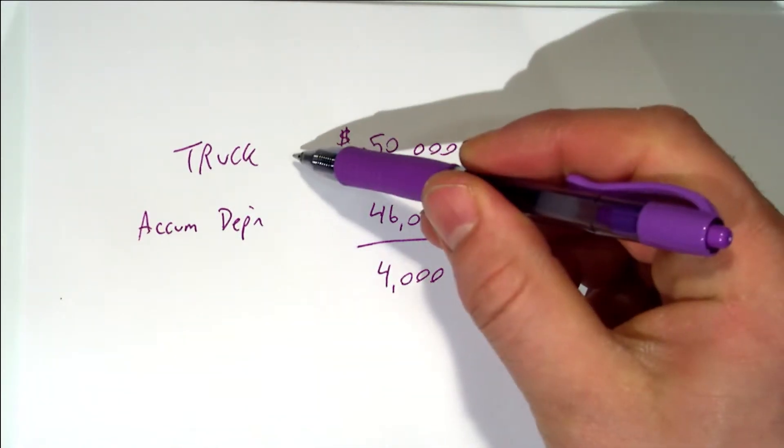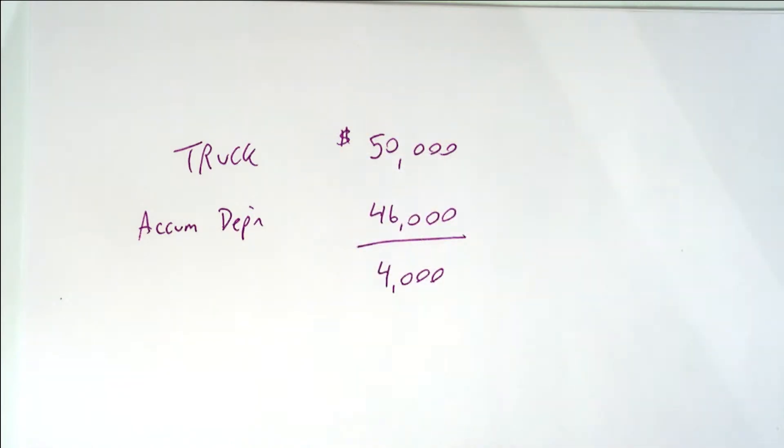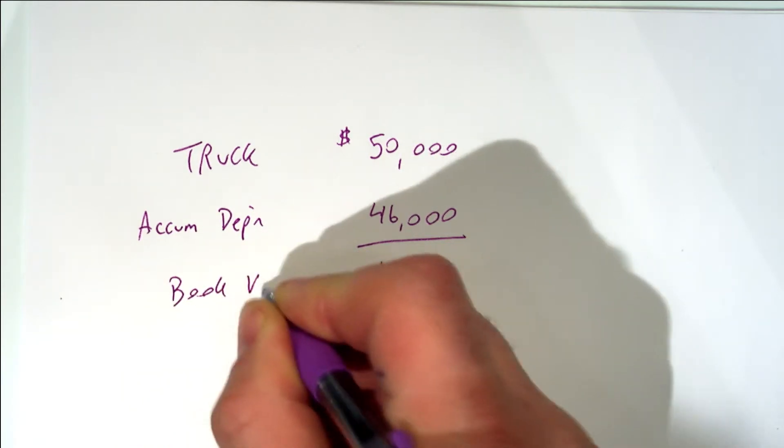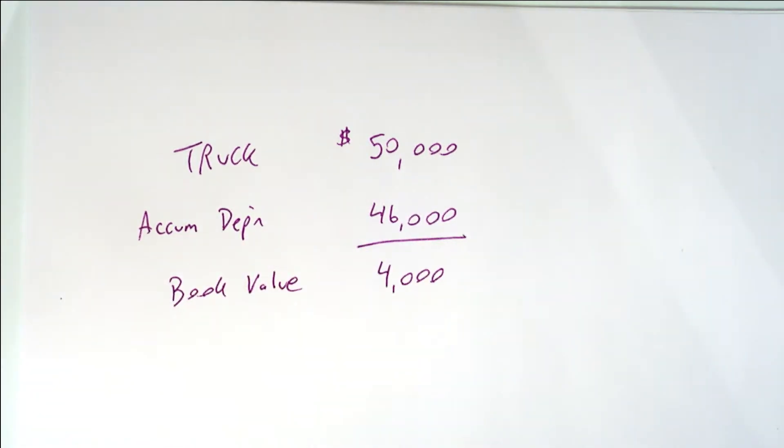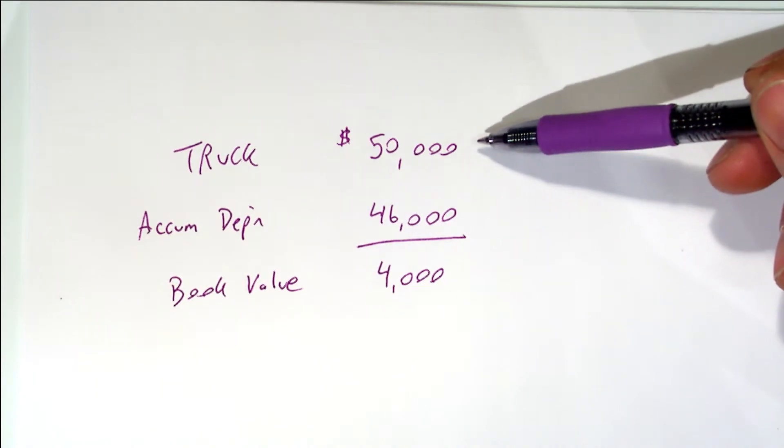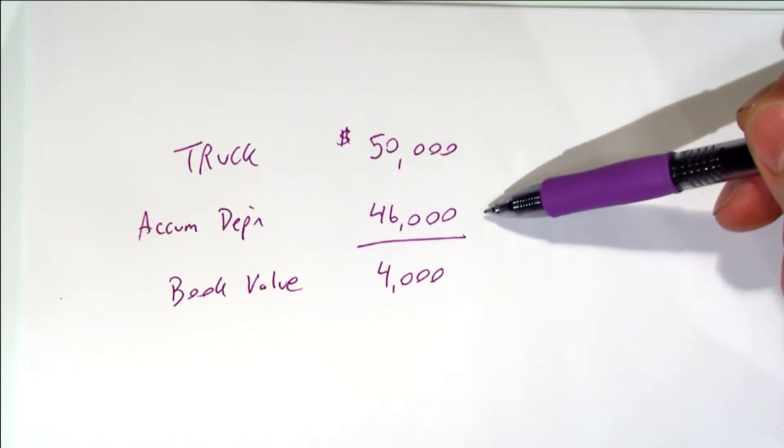What is the cost of a fixed asset less the accumulated depreciation? It's the book value. Remember? The book value. So this asset, this truck is on our books at a cost of fifty and the accumulated depreciation is forty six.